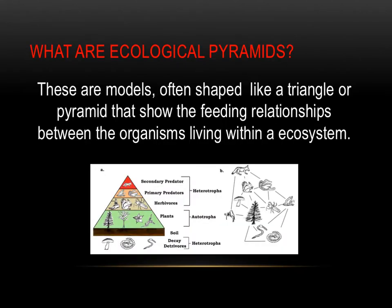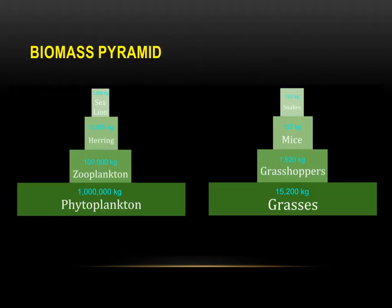What are ecological pyramids? These are models, often shaped like a triangle or a pyramid, that show the feeding relationships between the organisms living within an ecosystem. One such pyramid is a pyramid of biomass. These show the amount of living material, or biomass, at each trophic level. Grams or kilograms are the unit of measurement used in this type of model.